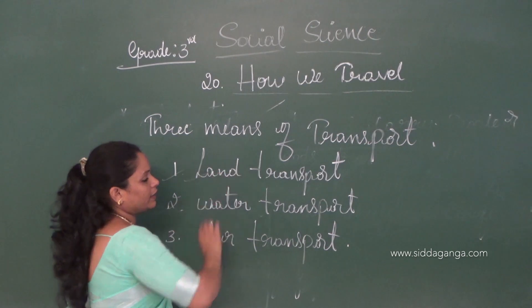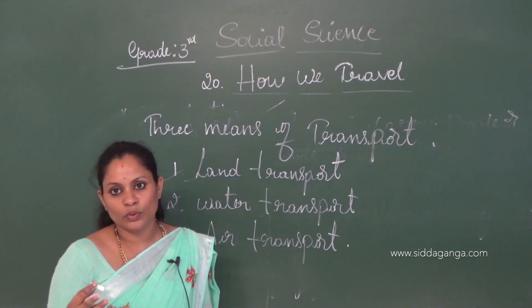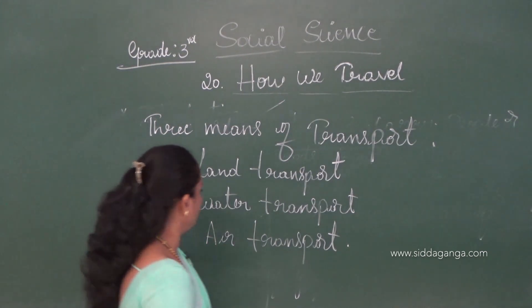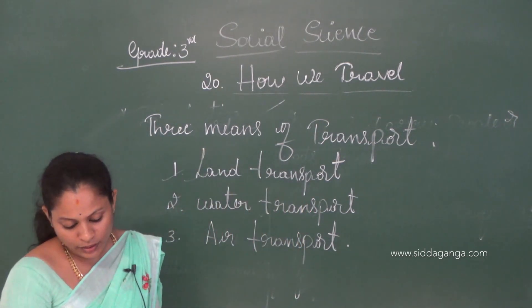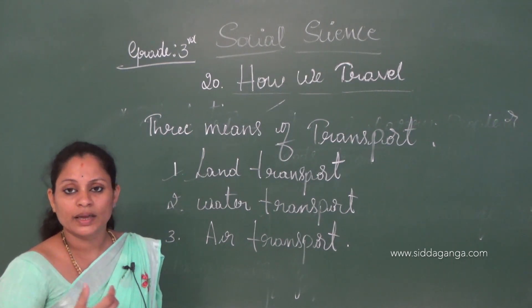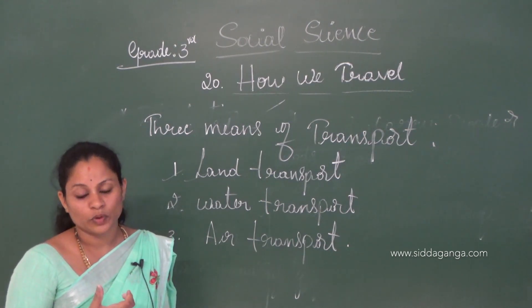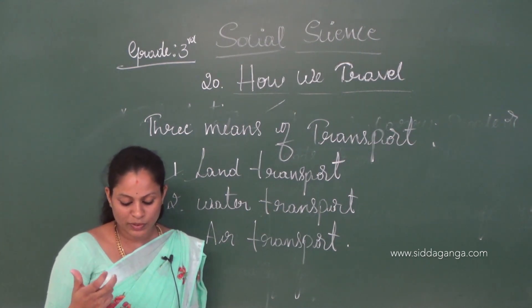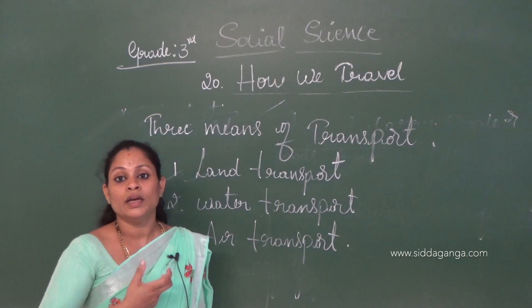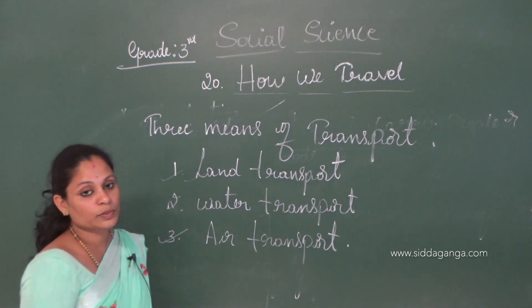Land transport: take and carry people or goods from one place to another on land. Water transport is the cheapest means of transport.